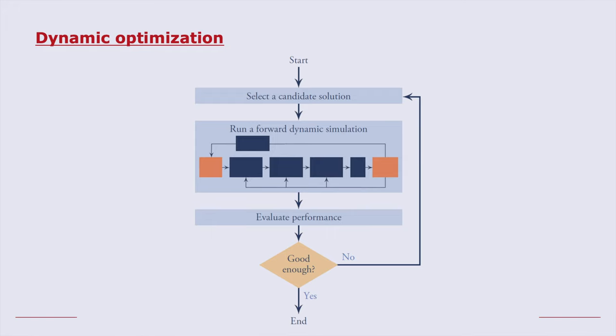So here's what it might look like in terms of a solution process. We start off by selecting a candidate solution. Suppose we have motors in our model that represent the action of our muscles, and so each motor will be generating a certain torque over time. The candidate solution might be a description of those curves over time.